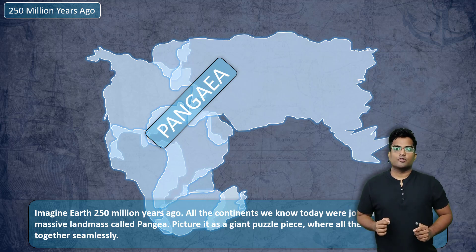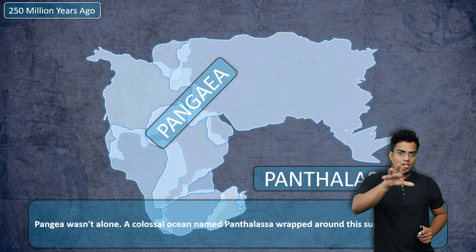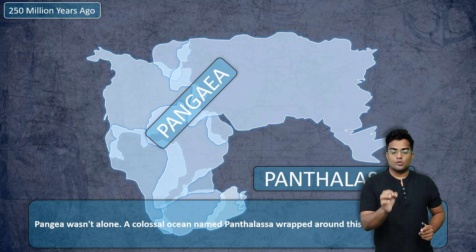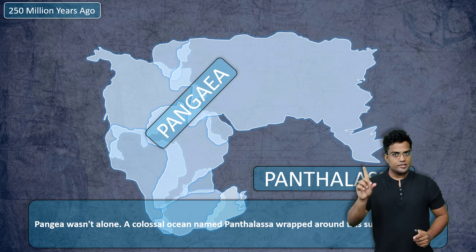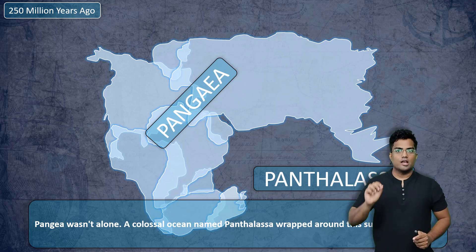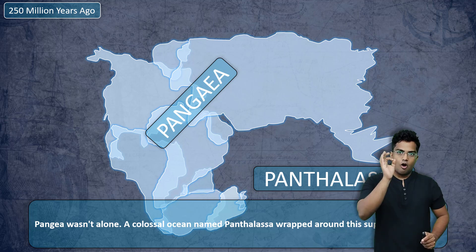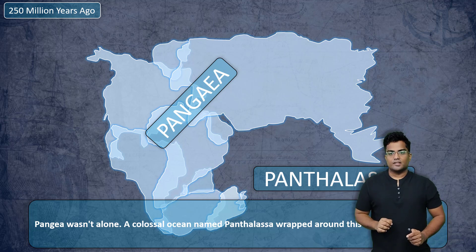There is an interesting thing you also have to know. Other than Pangaea — that's the name of the continent — there was a super ocean known as Panthalasa. Pangaea was the name of the supercontinent and Panthalasa was the name of the super ocean.